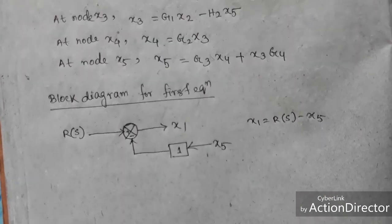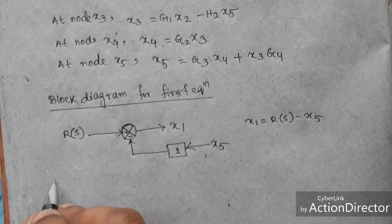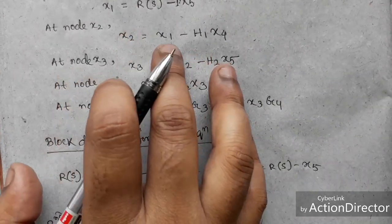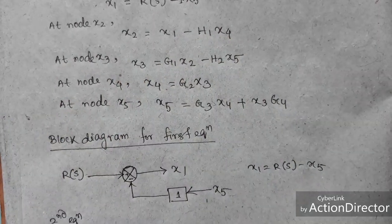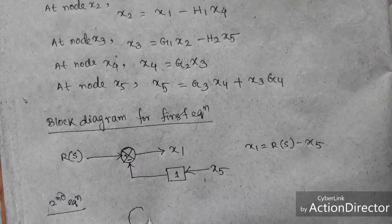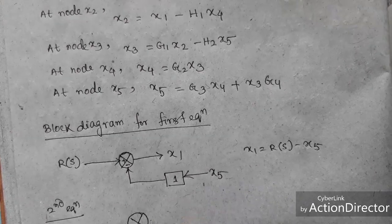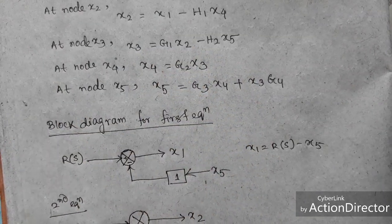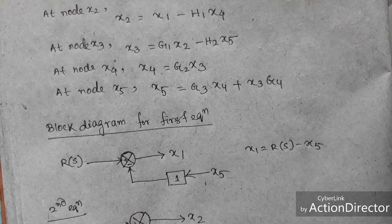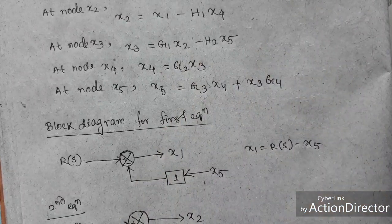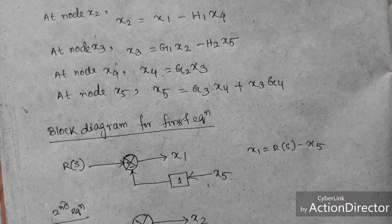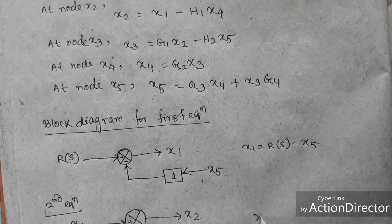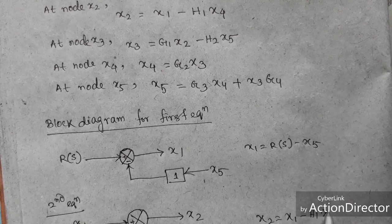Block diagram for equation 2: x2 = x1 − h1·x4. We draw a summing block with output x2. x1 enters with a positive sign, and x4 enters through a gain block h1 with a negative sign. This gives x2 = x1 − h1·x4, completing the second equation.